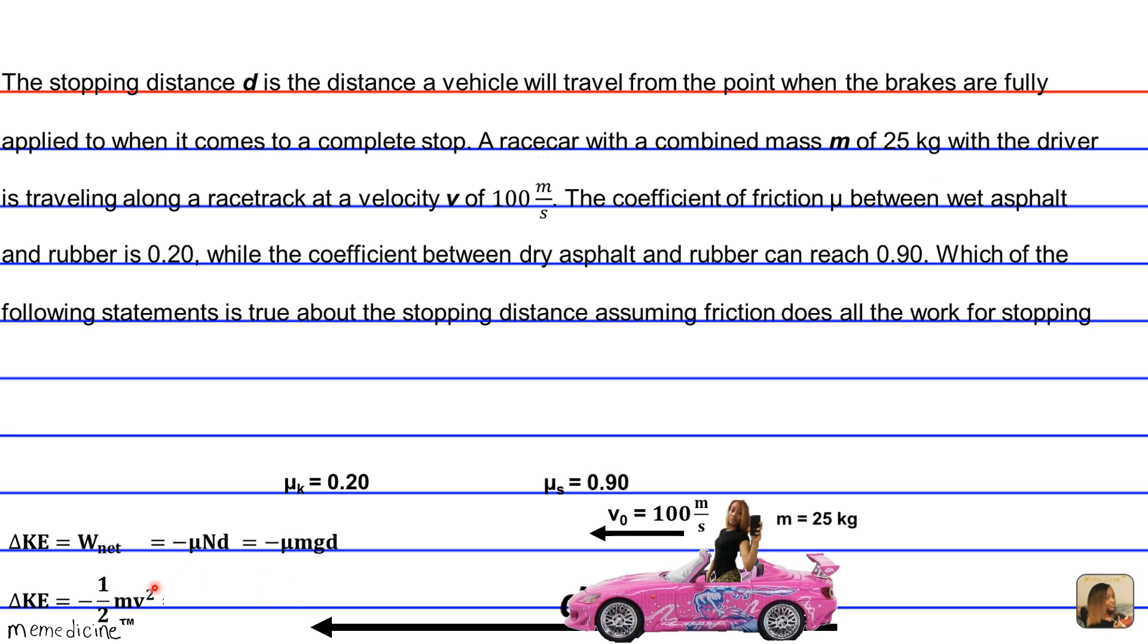Okay, so now we can set this equal to this. We see that negative ½mv² is equivalent to negative μmgd, so our negatives are going to cancel out, and so are our masses.